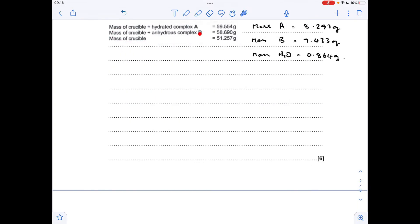Okay, so moving on to this mass data now. We can work out the mass of A by taking this mass here and subtracting the mass of the empty crucible, so we've got 8.297 grams of A. The mass of B is the crucible with the anhydrous complex in it minus the empty - 7.433 grams. And the mass of water that's removed, so obviously the difference between those two numbers, 0.864 grams.